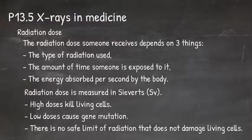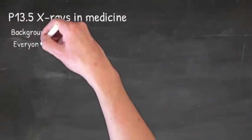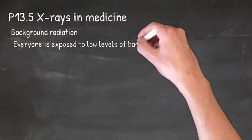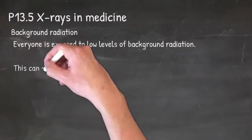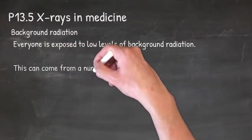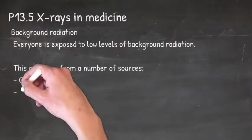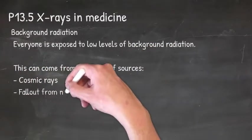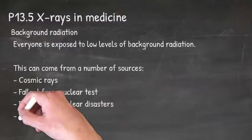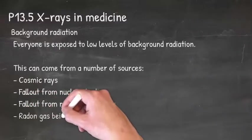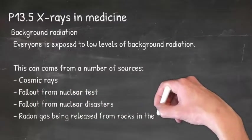So a bit about background radiation. Everyone is exposed to low levels of background radiation. This can come from a number of sources: cosmic rays, fallout from nuclear tests, fallout from nuclear disasters, and radon gas being released from rocks in the earth.